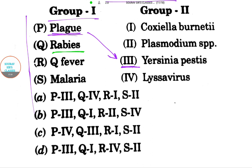Now Q is for rabies. Rabies belongs to the rhabdovirus family, and the causative agent for rabies is Lyssavirus, option IV.